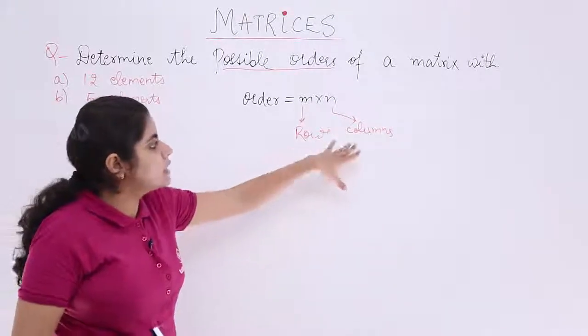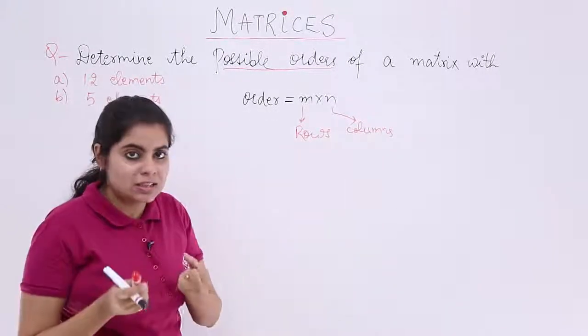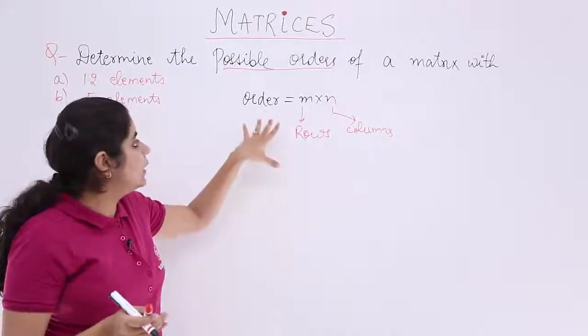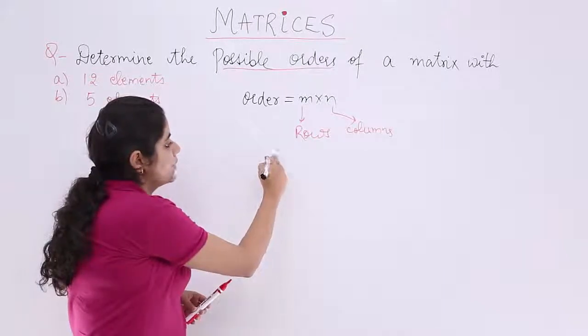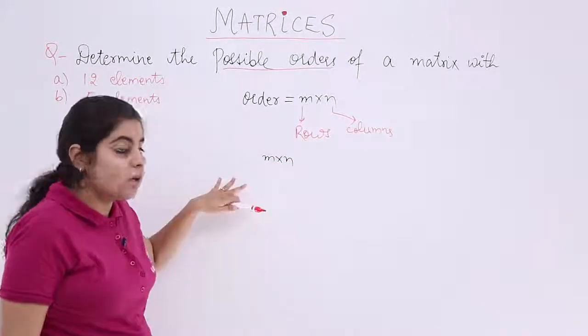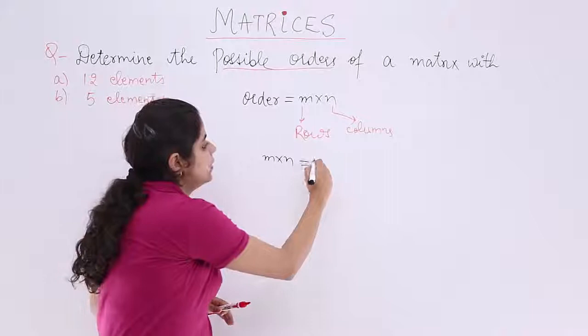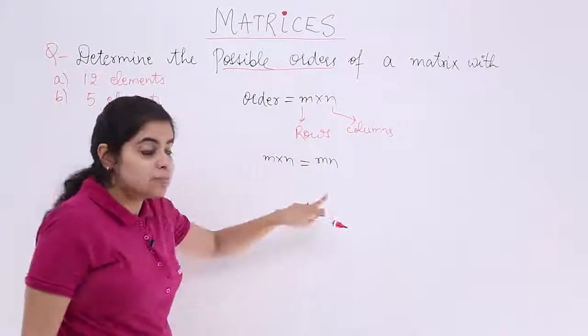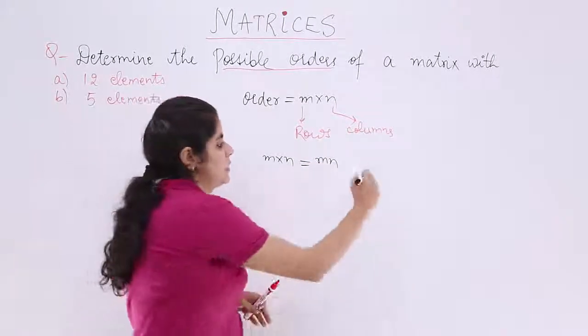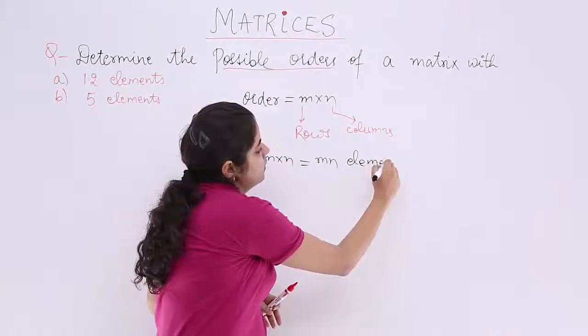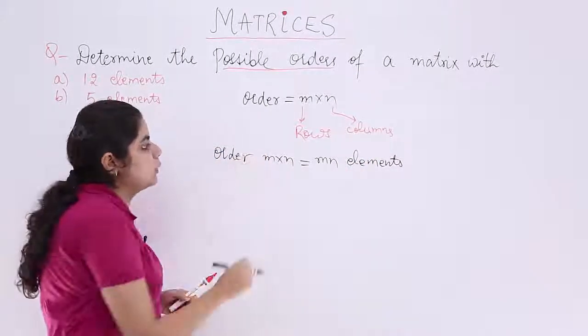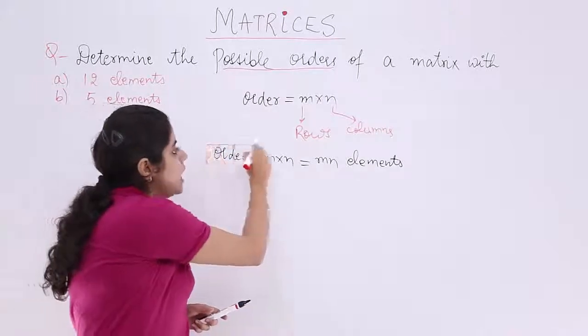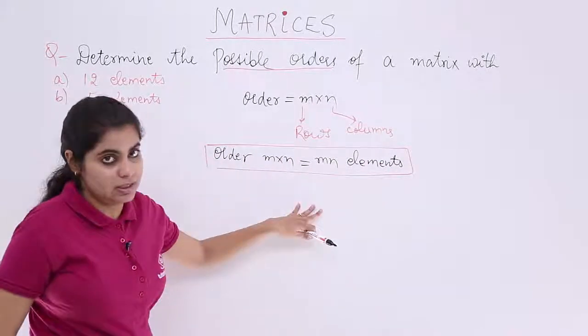Now, number of rows and number of columns, when multiplied, will give me the order and hence the number of elements. Remember, suppose the order is m by n. That means it is m into n, which equals mn. So it means it has mn elements. This is the basic story behind the relationship between order of a matrix and number of elements. This we already know.